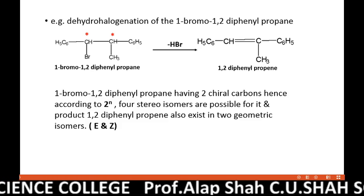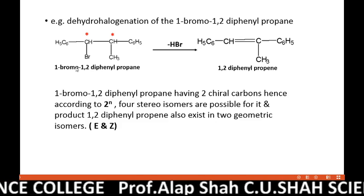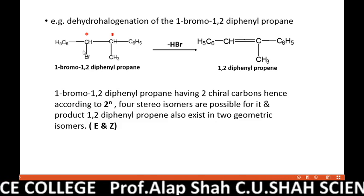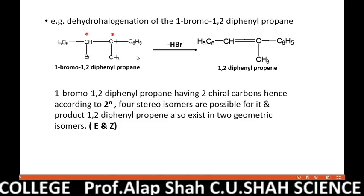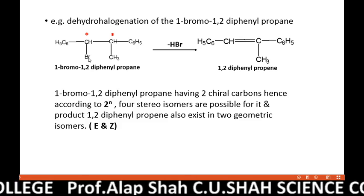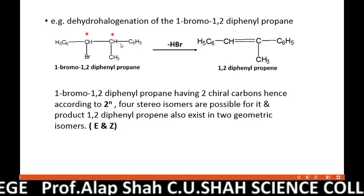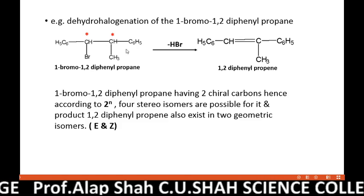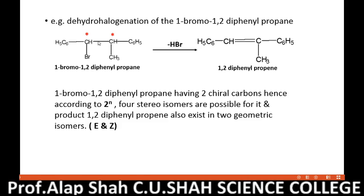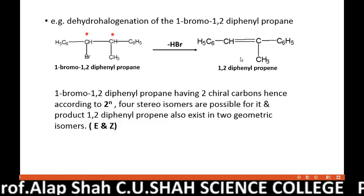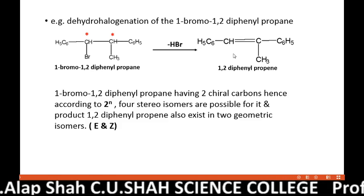Dehydrohalogenation of 1-bromo 1,2-diphenyl propane. You can see that bromine and its beta hydrogen are eliminated in the form of HBr. A new double bond forms between alpha and beta carbon, and the product is called 1,2-diphenyl propene.